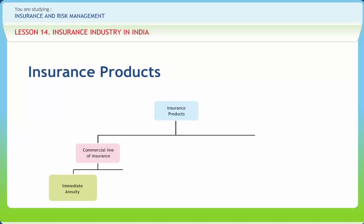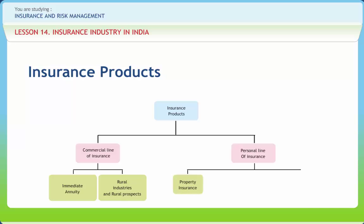Next is rural industries and rural prospects such as plantation insurance, failed well insurance, and PC culture insurance. Next is personal line of insurance — insurance for individuals and families — such as private passenger auto and home owners insurance, property insurance, accident insurance such as personal accident insurance, Nardo Lahiri insurance and wedding bells insurance, and health insurance such as Medi claim insurance, Jan Arogya insurance, and overseas Medi claim insurance.